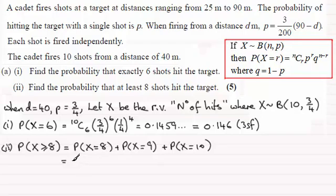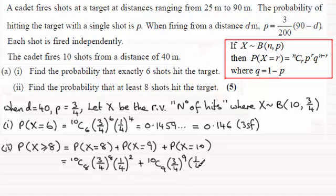So, the probability of X equals 8 will be 10c8. And then you've got probability of success, that's 3 quarters. That will occur 8 times over. There will be 2 misses. So, you've got probability of a miss is a quarter, raised to the power 2. And similarly, for 9, that's going to be 10c9, 3 quarters to the power 9, and then 1 quarter to the power 1.